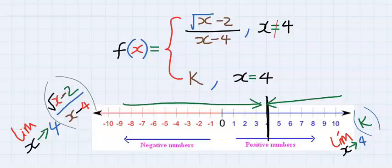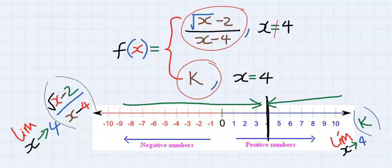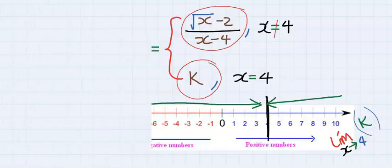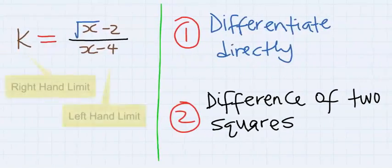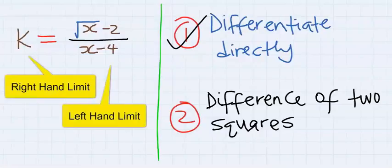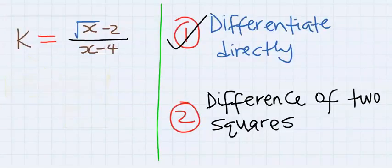For the continuity of this function, the left hand limit must be equal to the right hand limit. Hence we equate this and then solve. To solve this, you can differentiate directly or you can apply difference of two squares.